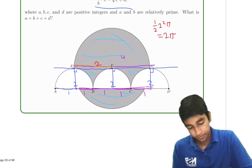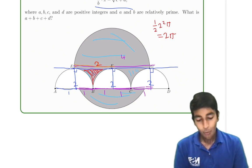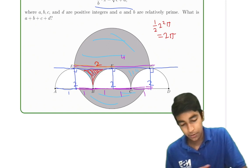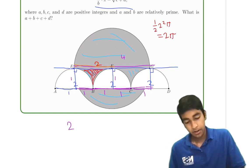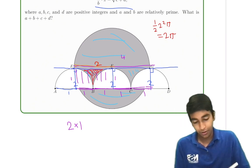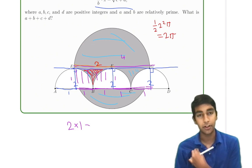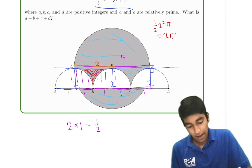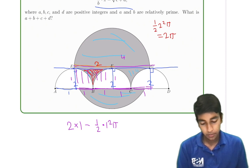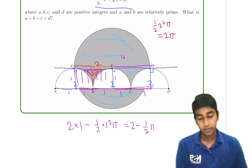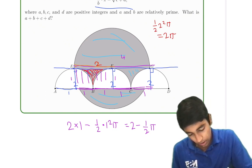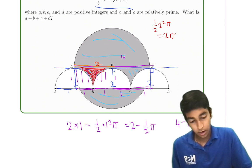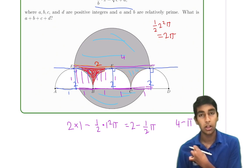For the side regions: each one is the area of a rectangle (2 × 1) minus two quarter-circles of radius 1. Two quarter circles make a half circle, so we subtract ½ × 1²π. Each region equals 2 − π/2. There are two such regions, giving a total of 4 − π.